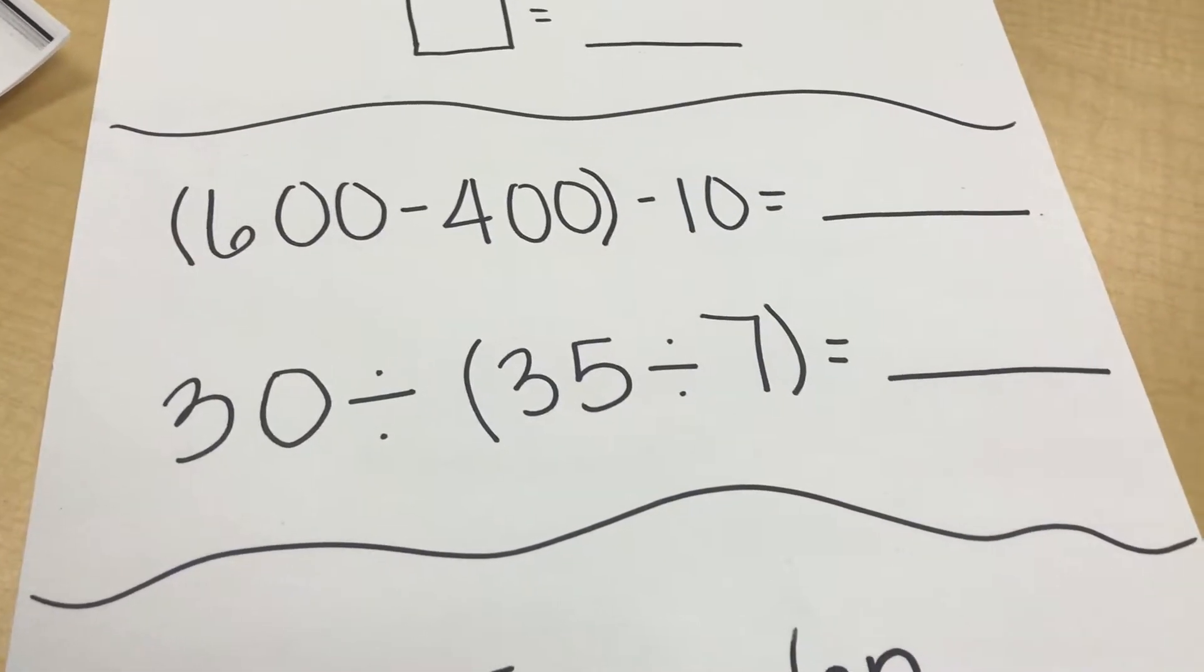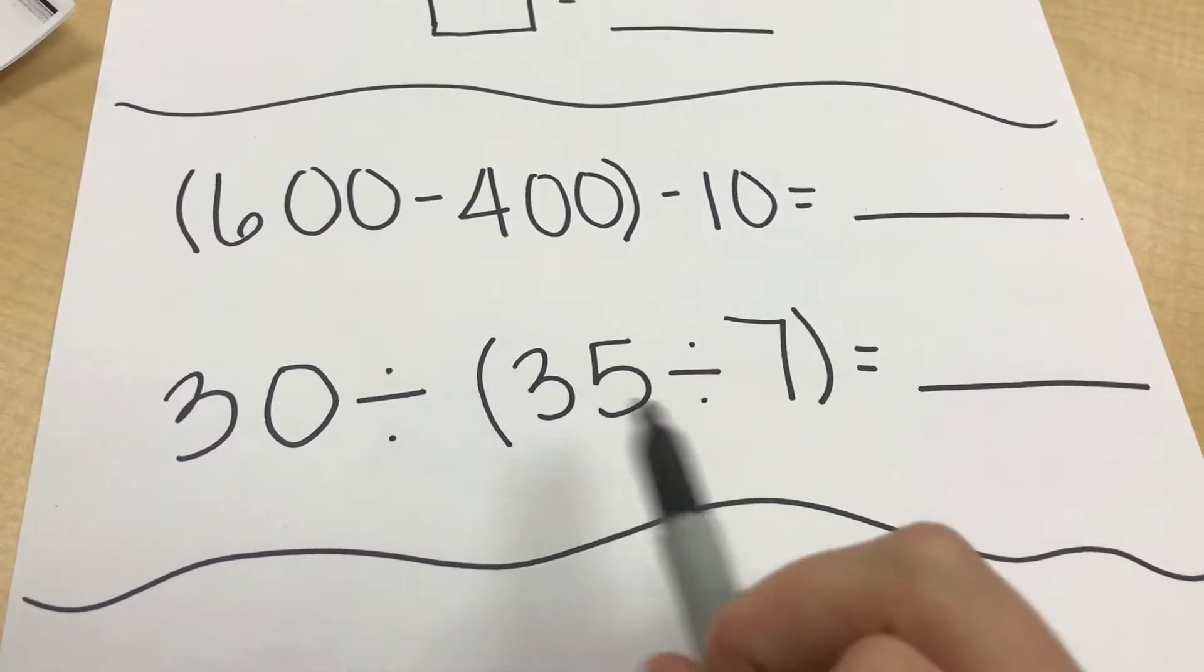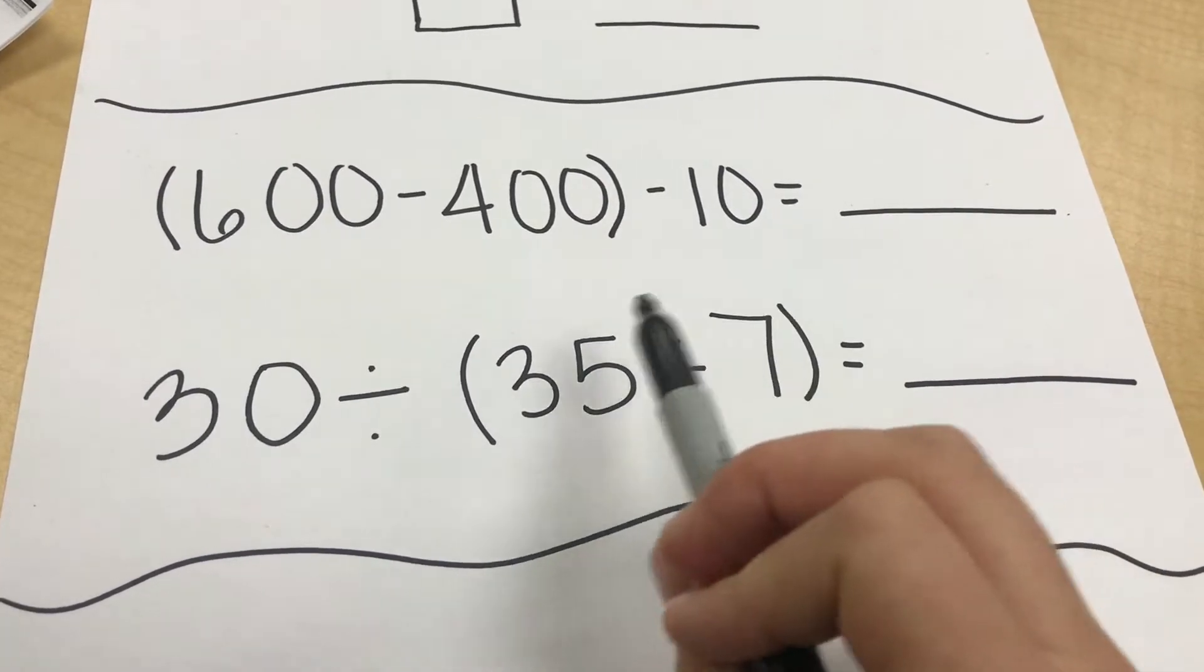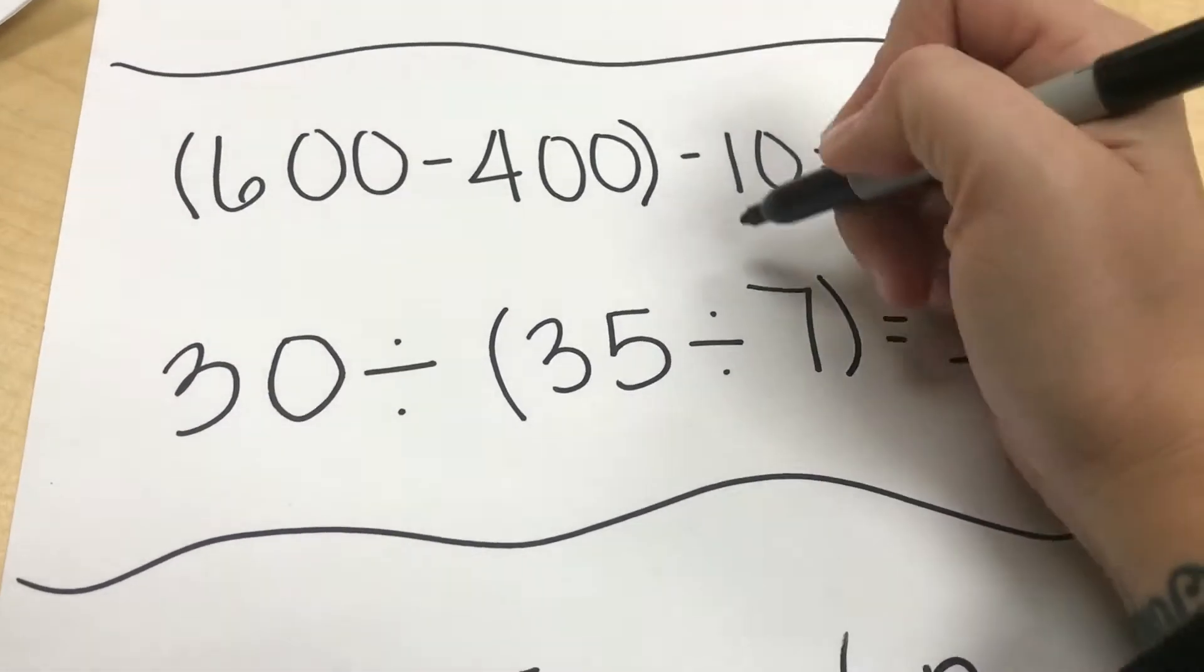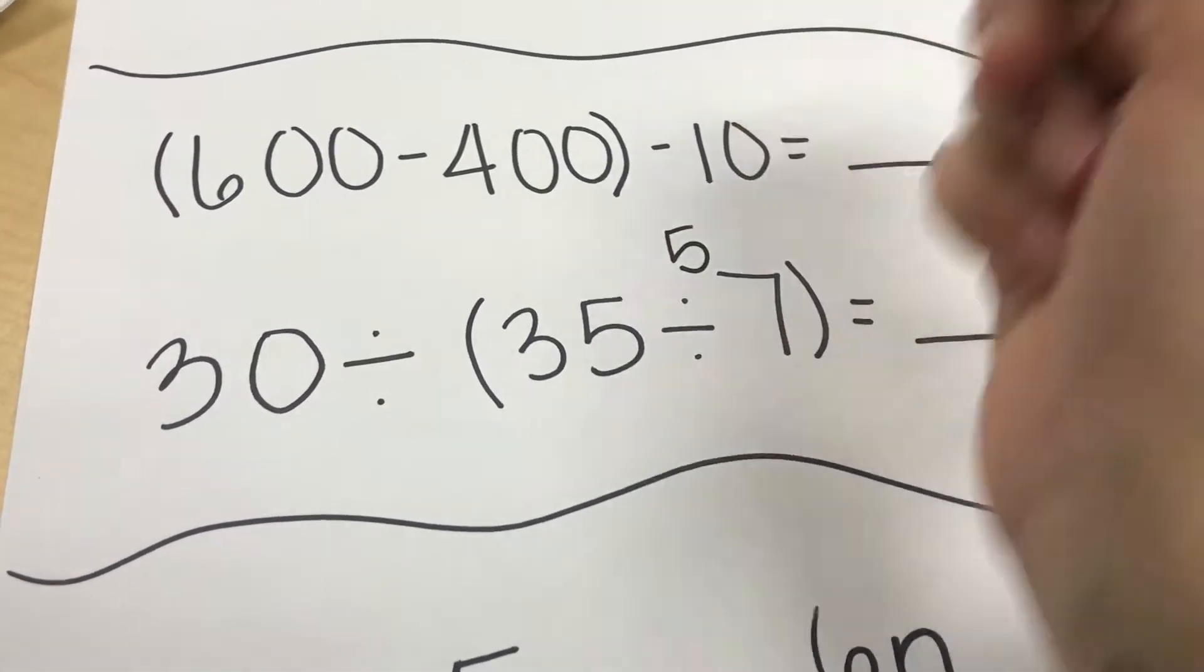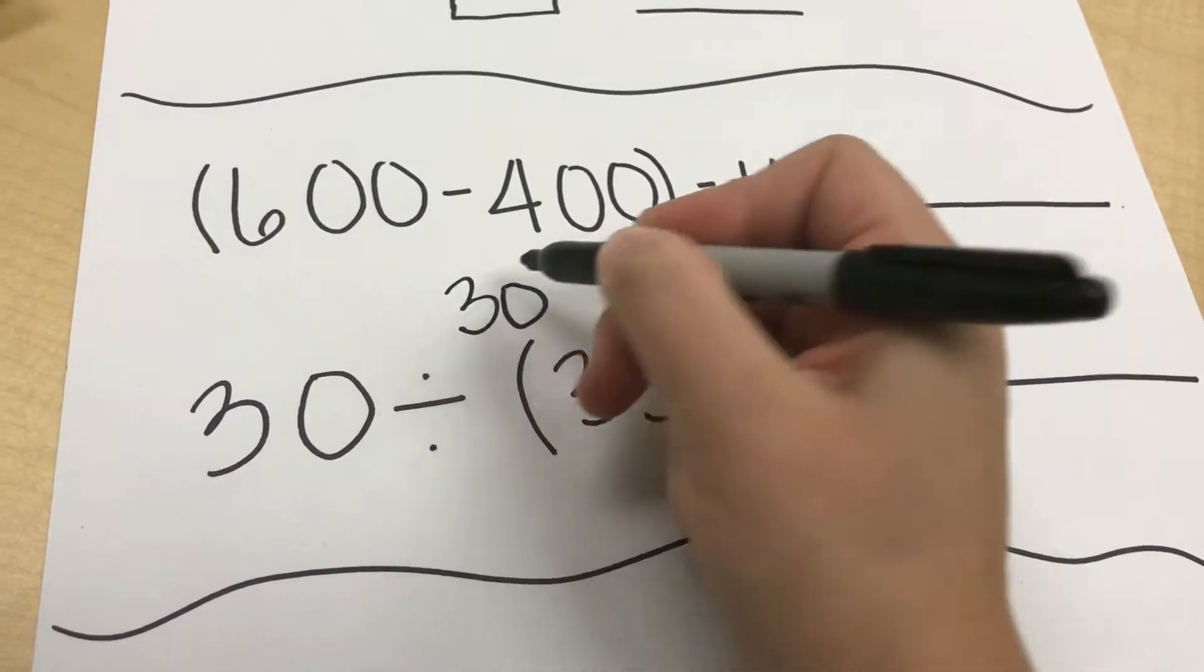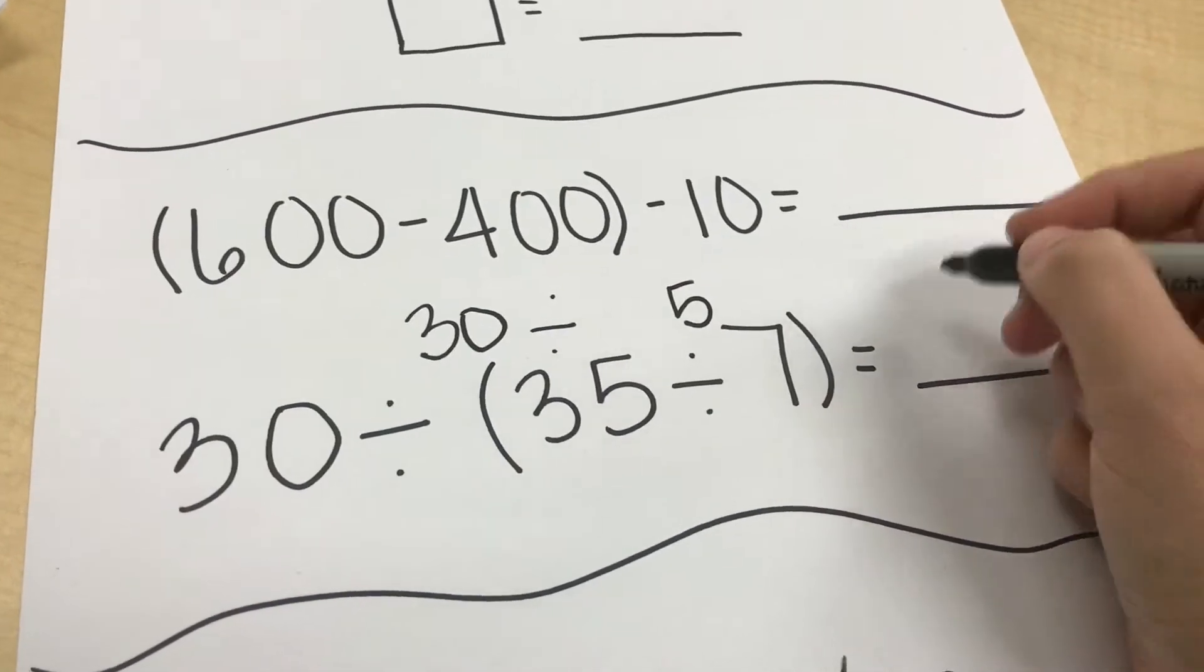All right, to the next step of problems that we have. This is to solve. We will come out with an answer. And again, we always work within the parentheses first. So our first step is to divide. 35 divided by 7 equals 5. And now we can take the rest of our problem here. And we have 30 divided by 5. 30 divided by 5 is 6.